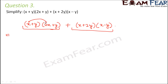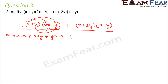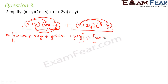So here with two binomials, x would get multiplied to both terms and then added, and y will get multiplied to both terms and then added. So the first product gives: x into 2x plus x into y plus y into 2x plus y into y. Now for the second expression, x gets multiplied to both terms: x into x minus x into y, plus 2y into x minus 2y into y.